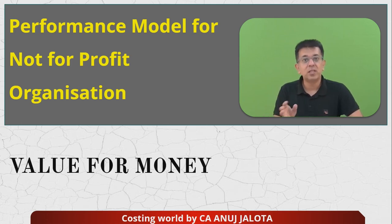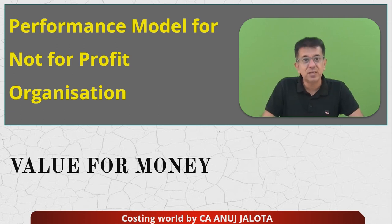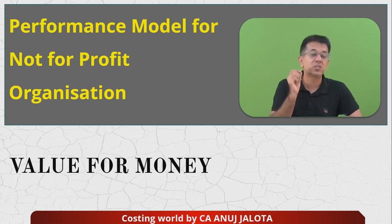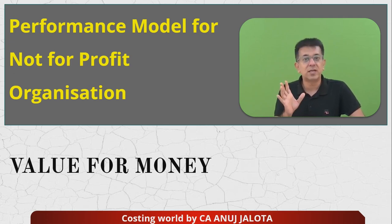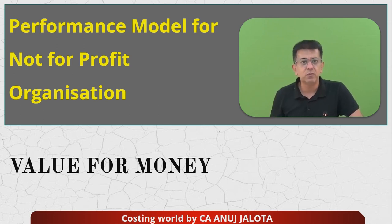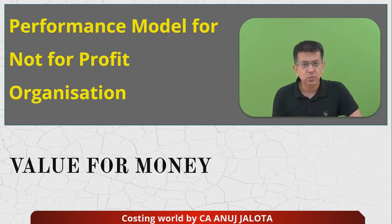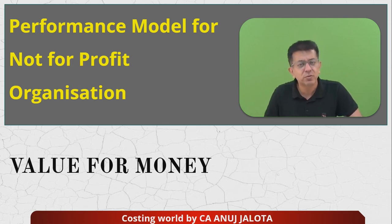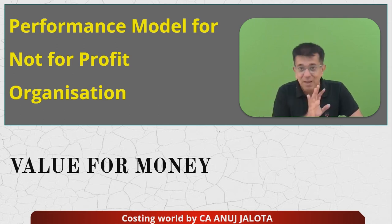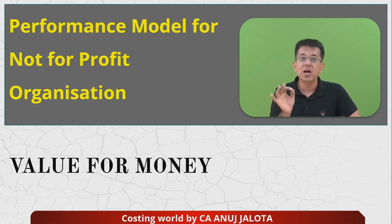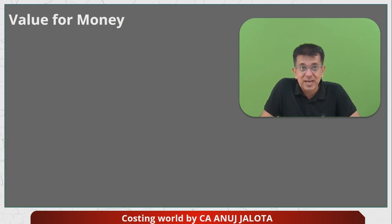For that, there was a concept called value for money — a model made for all organizations which are not-for-profit. The basic idea is we will judge these organizations not from the angle of how much profit they have earned, because that's not their motive. They are here to do specialist work. For example, a committee set up for keeping the Taj Mahal clean had the objective that the Taj Mahal should always look perfectly clean, with no dust or littering, so foreigners see it as a wonder of the world. They don't have an objective of earning profit. The money of the public should be used for accomplishing the objective. So for non-profit organizations, the value for money model looks at performance from three angles.